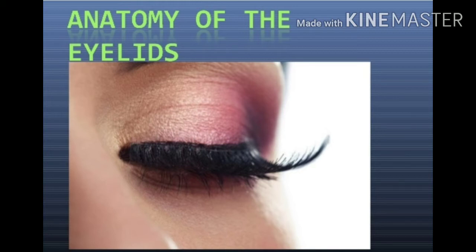The eyelid in Latin is called palpebra and in Greek it is called blepharon. Clinical conditions related to the eyelid are referred to in terms of Greek — for example, inflammation of the margin of the eyelid is called blepharitis, and congenital absence of eyelid is called ablepharon.